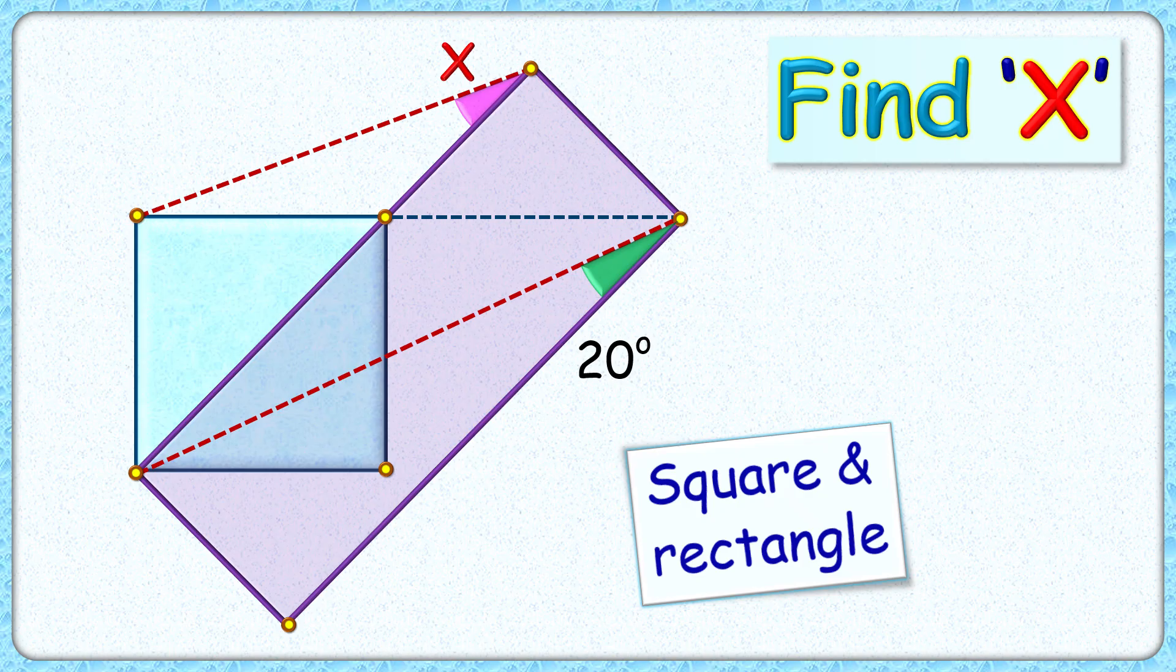Welcome everyone. This interesting question involves a square and a rectangle such that two vertices of the square and a vertex of the rectangle are collinear. Given is that the angle between the diagonal of the rectangle and the side of the rectangle is 20 degrees. The exciting part is, with this limited data, we have to find the value of this pink angle, or value of X.